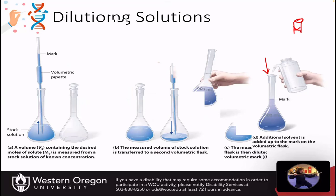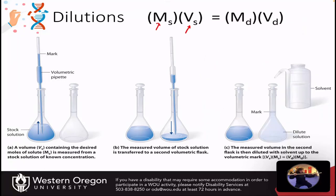We can also make dilutions. We use stock solutions quite a lot in the laboratory. We use our dilution equation where we have the concentration of the stock and the volume of the stock solution, and the concentration of the dilution and the volume of the dilution. The units that have to match are the units of concentration — they have to be the same as each other. The units of concentration don't have to match the units of volume; you just want to make sure that you can cancel out whatever you have two of.